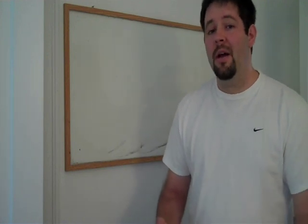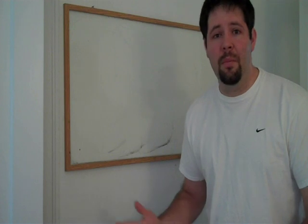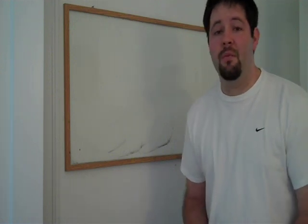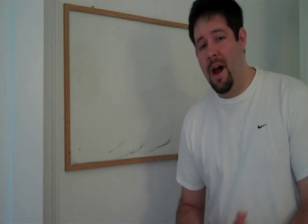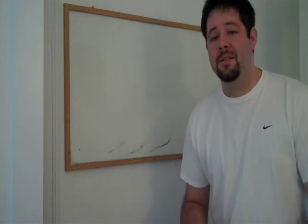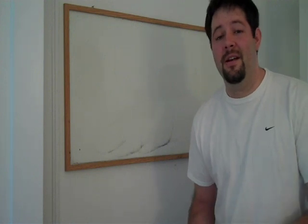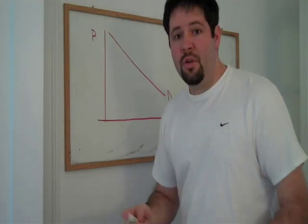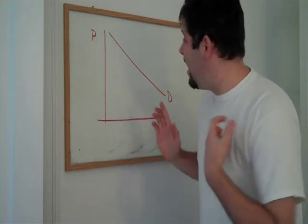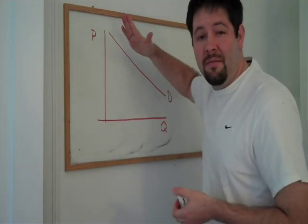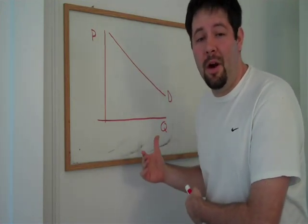When we were talking about a competitive firm or a competitive industry, we had a whole bunch of firms that were competing with one another, and they just had to take the price as given. With a monopoly, things are different because the firm is the only one in the industry, so it gets to see the entire demand curve for the industry. The first difference between a monopoly and a competitive firm is that the monopoly takes the demand curve as given. A competitive firm just took the price from the equilibrium and the market as given.